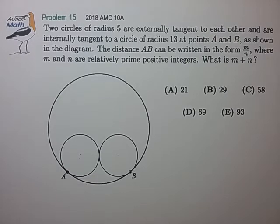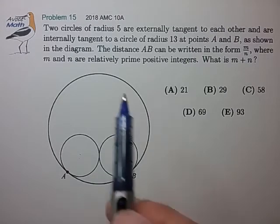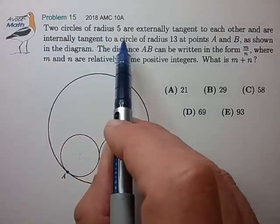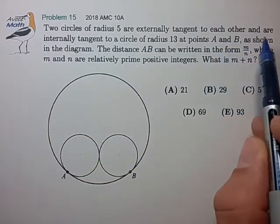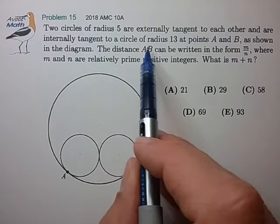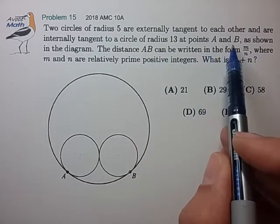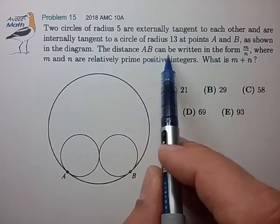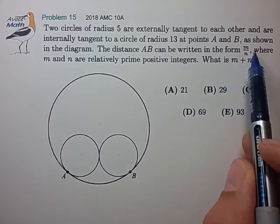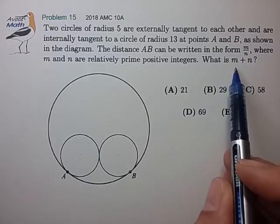Hi, this is problem 15 from the 2018 AMC 10a. Two circles of radius 5 are externally tangent to each other and are internally tangent to a circle of radius 13 at points A and B. The distance AB can be written in the form of a reduced fraction m over n. Find m plus n.